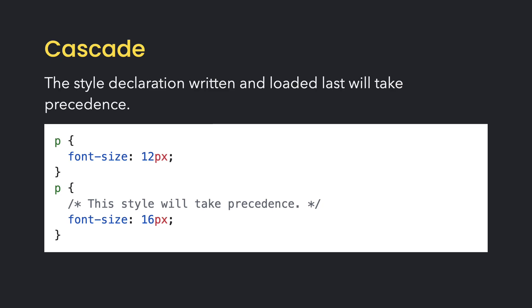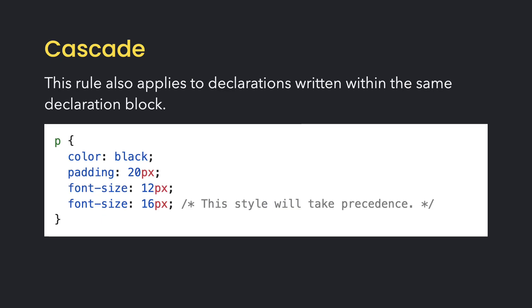The cascade rule also applies to CSS declarations written in the same declaration block. You might be thinking, why would I use the same selector or style declaration twice? It's actually a pretty common error. As your CSS files get bigger and longer, you may forget you've already used a certain selector or property and accidentally use it again.